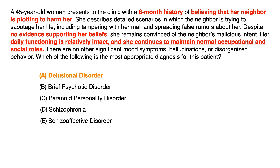Previous criteria for delusional disorder in older versions of the DSM required that the delusions be what's known as non-bizarre, meaning they involve situations that could perceivably happen in real life — things like being followed, stalked, poisoned, or being involved with a lover or spouse. These are not bizarre delusions, which are very unlikely to ever happen even in rare circumstances.